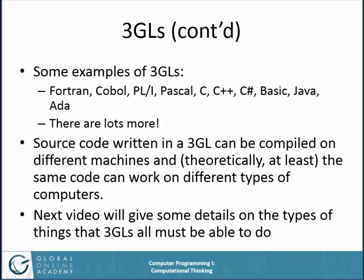Source code written in a third generation language can be compiled on different machines. As long as there's a compiler on those machines, you can compile it. You can't just run the machine code from one machine on another, but you can take your source code and compile it on different machines, and theoretically the same code can work on different types of computers. The next video will give you some details on the types of things that all 3GLs have to be able to do.